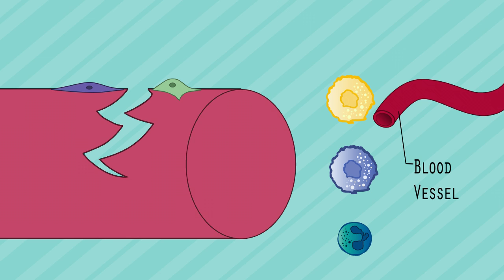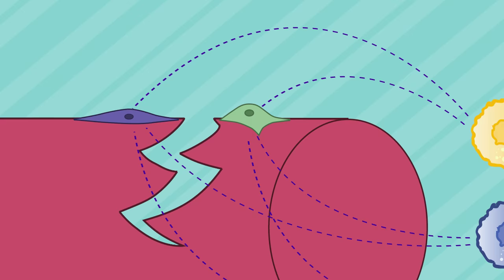After skeletal muscle damage, inflammatory cells are recruited to help repair and restore the damaged tissue by interacting with the stem cells resident within the muscle.